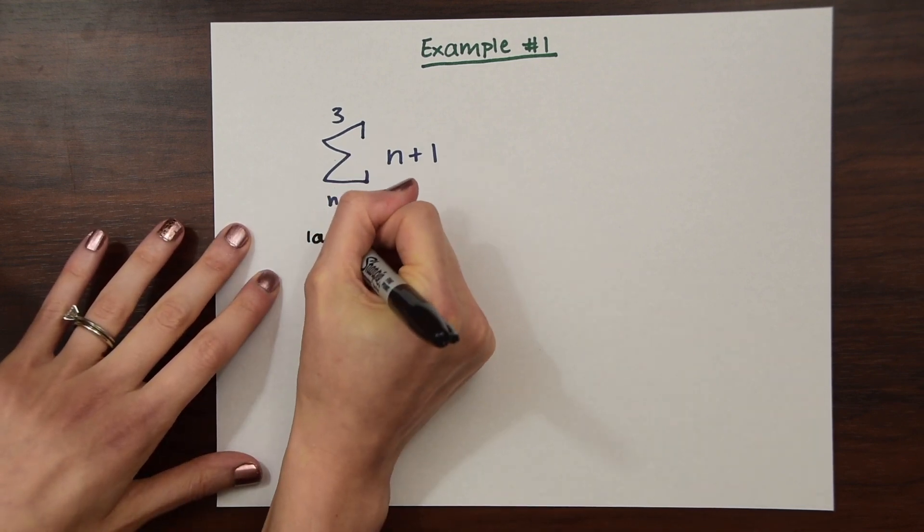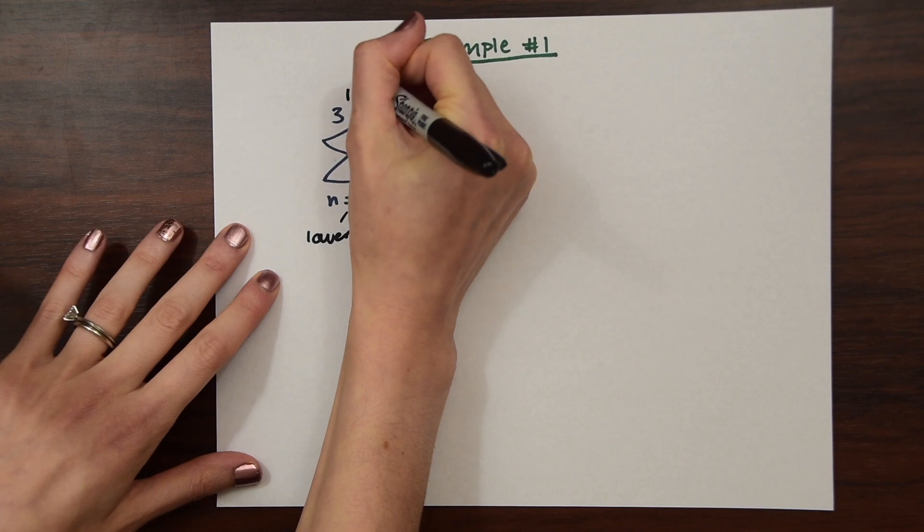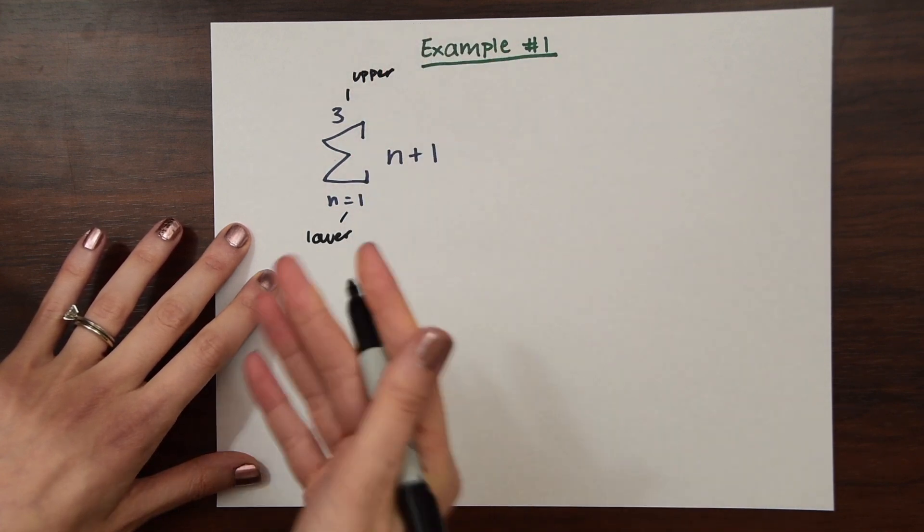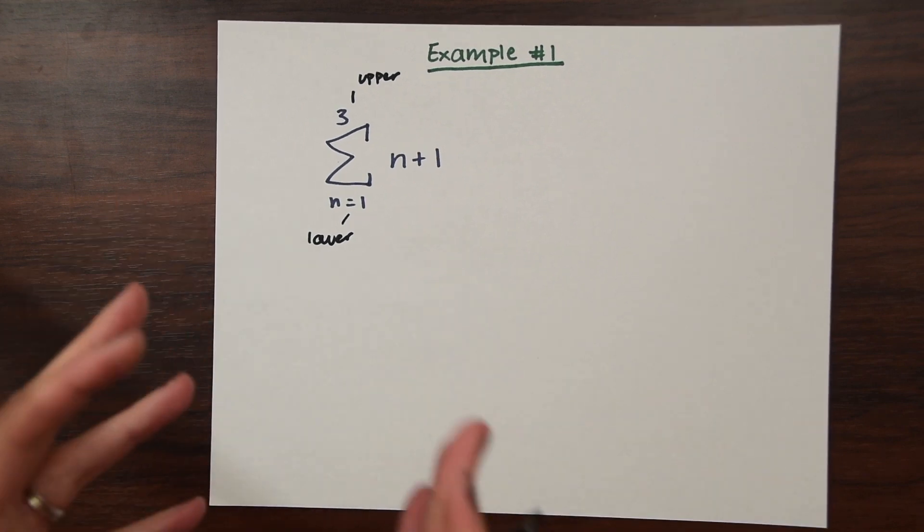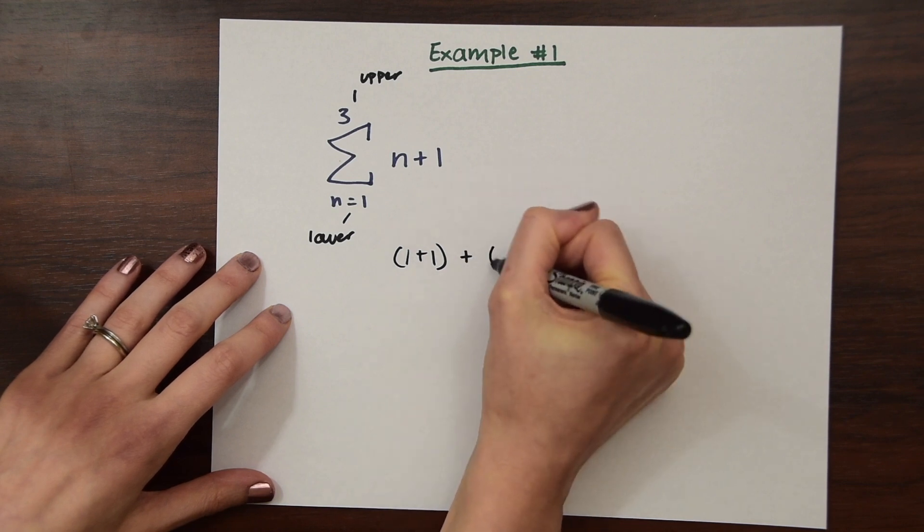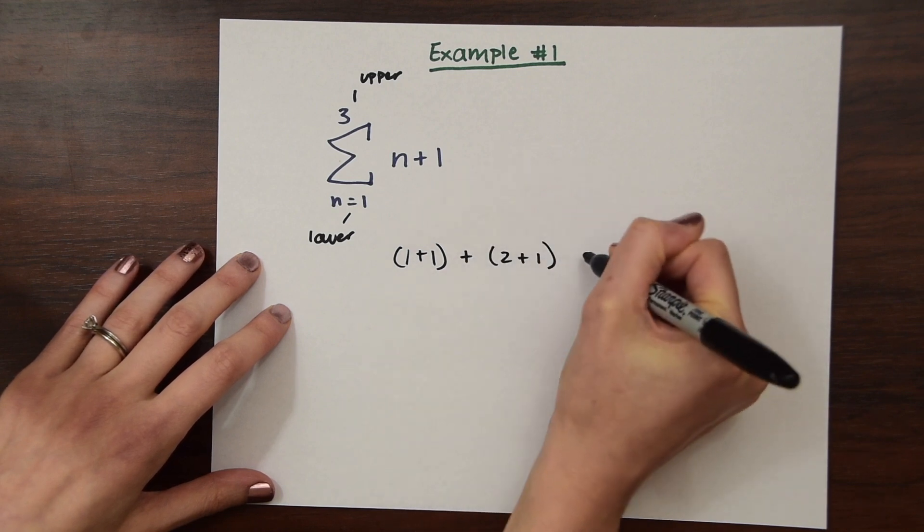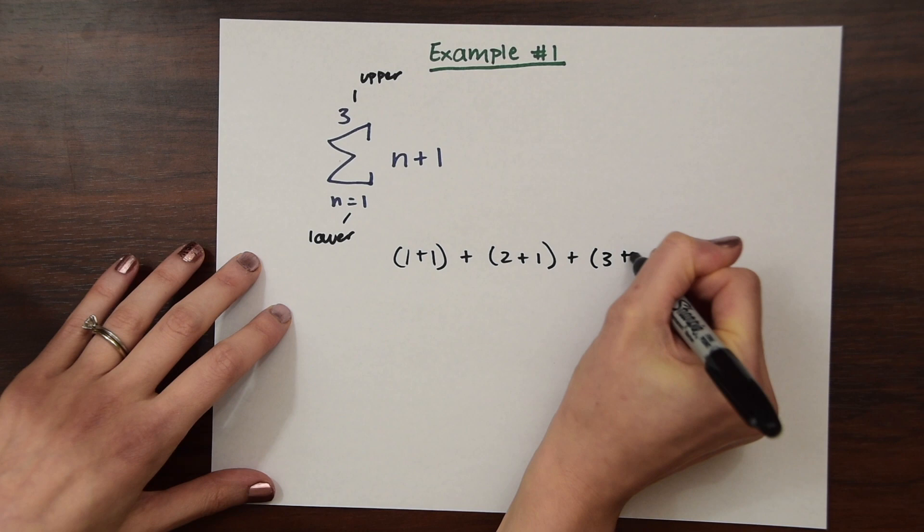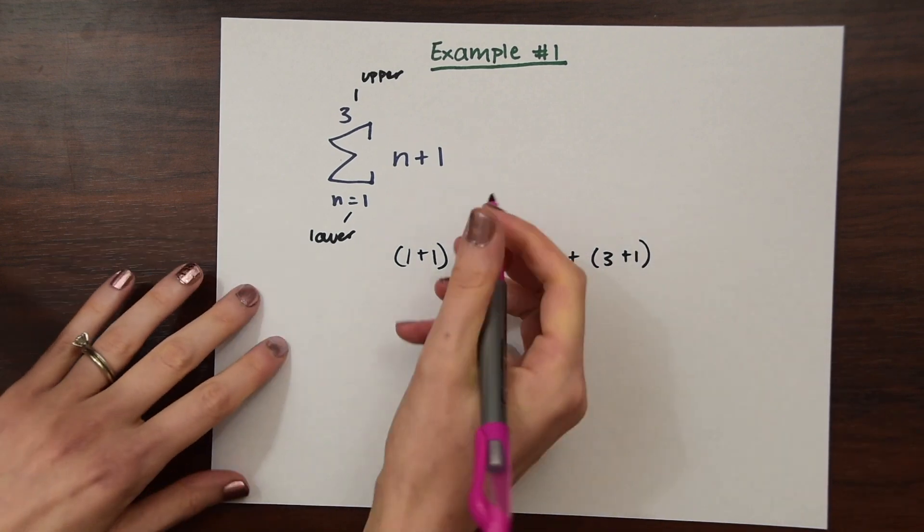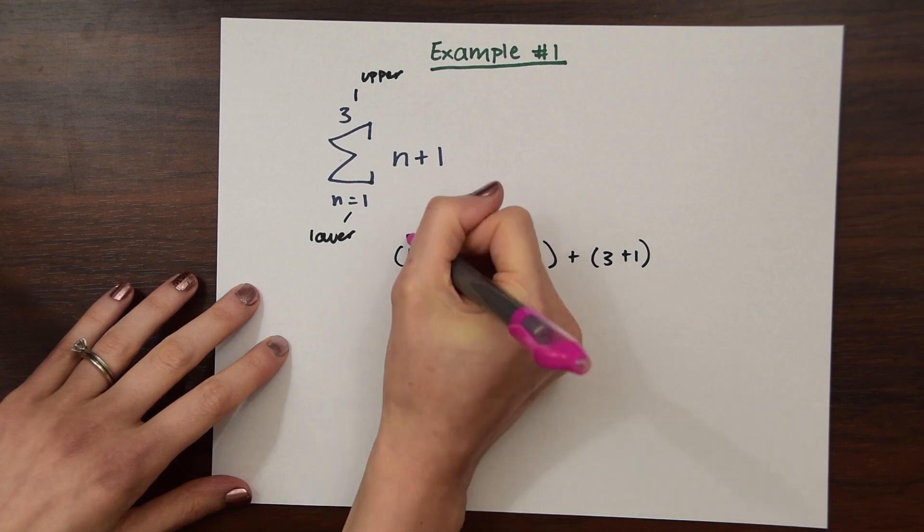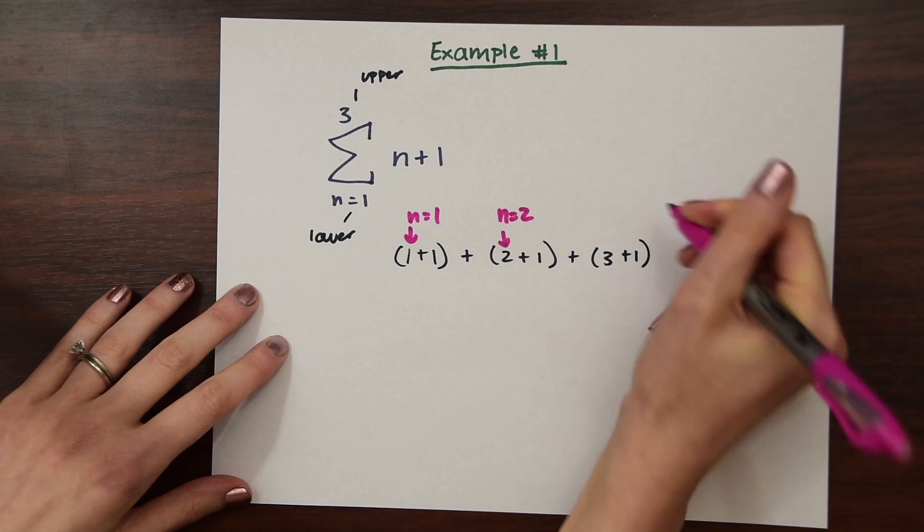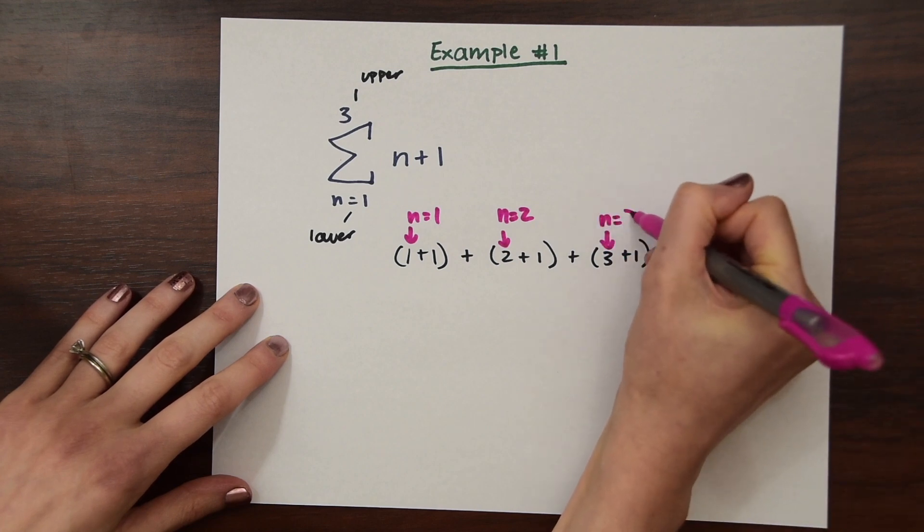So what that means, remember this is our lower limit, this is the upper limit. And we're just going to be plugging in these different values for n and then solving each little equation. So here we have 1 plus 1 and then we have 2 plus 1 and then we have 3 plus 1. So notice when we say different values of n, we just plugged in this is n equals 1, this is n equals 2, and then this is n equals 3.